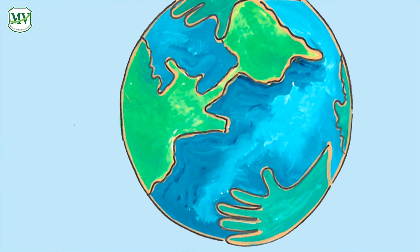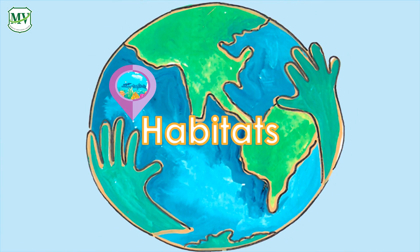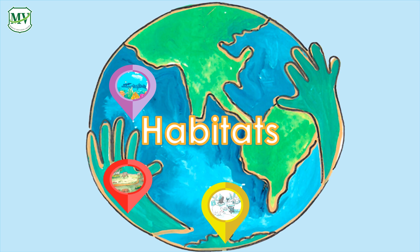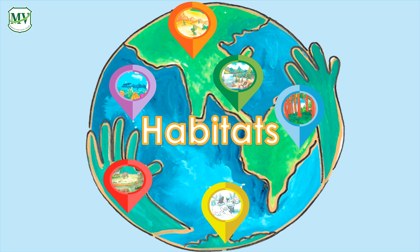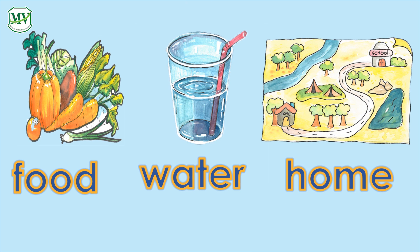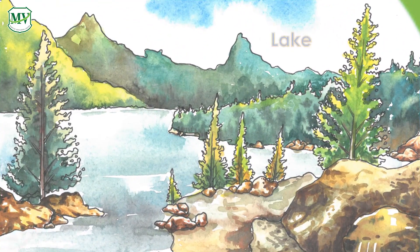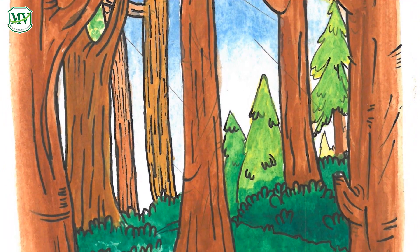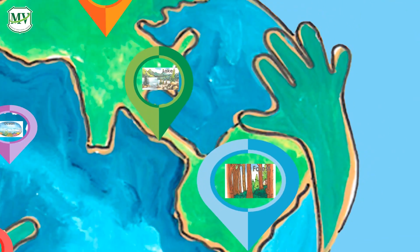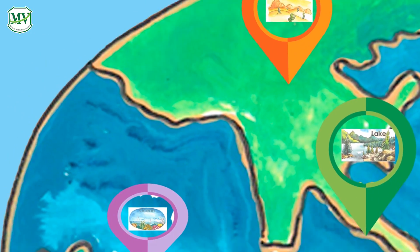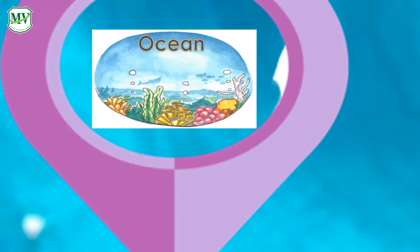A habitat is a place where an animal lives. The habitat provides the animal with food, water, and a place to live. There are different types of habitats around the world: garden, lake or river, forest, desert, ocean, and polar regions.